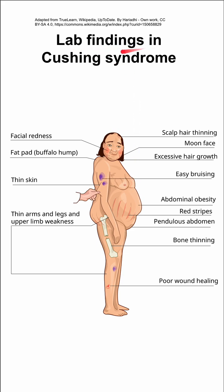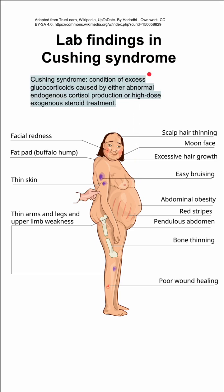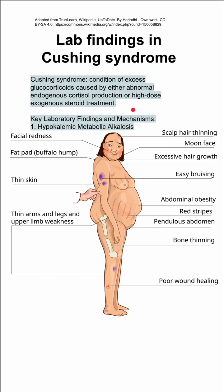Here are some notes on the lab findings in Cushing syndrome. Cushing syndrome is a condition of excess glucocorticoids, which can be caused by either abnormal endogenous cortisol production or high-dose exogenous steroid treatments. There are some key lab findings and mechanisms for each.